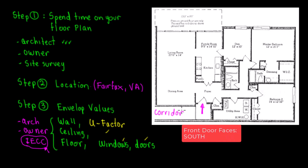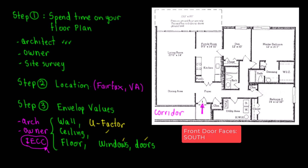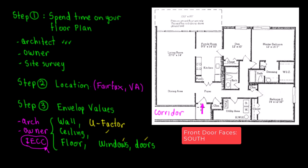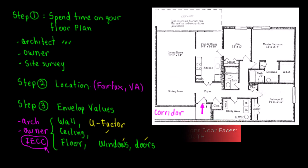The front door is your reference for orientation. If this direction is north, then you can determine east and west accordingly. After the main entrance, you have a foyer. From the foyer you can go left or right — on the left you have a dining area and a living room, which is an open space.